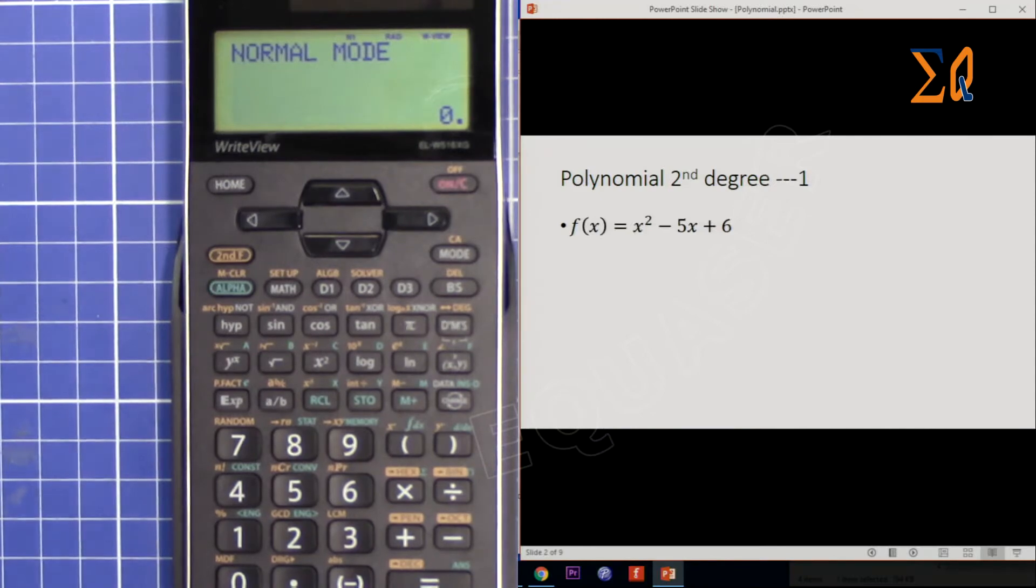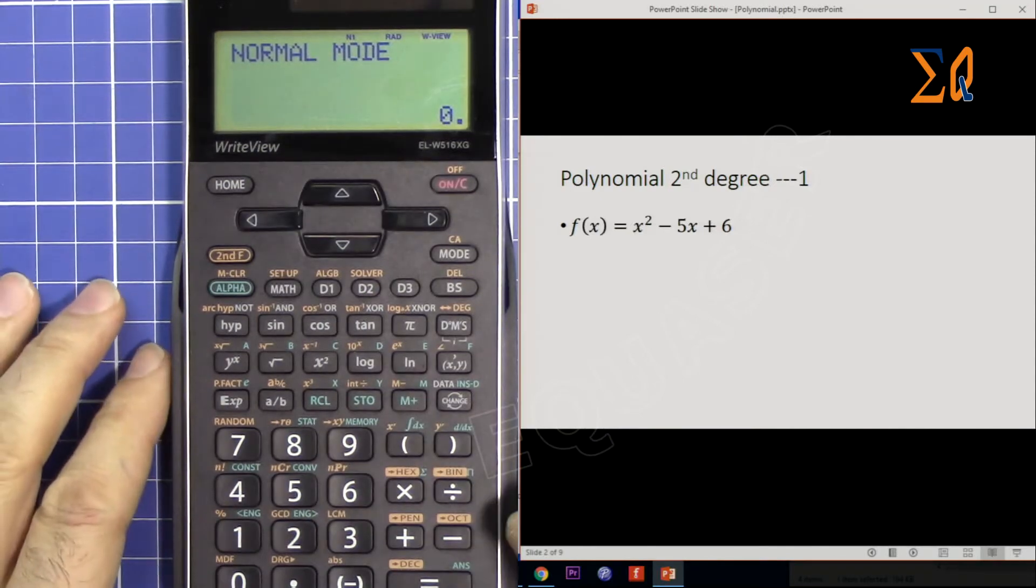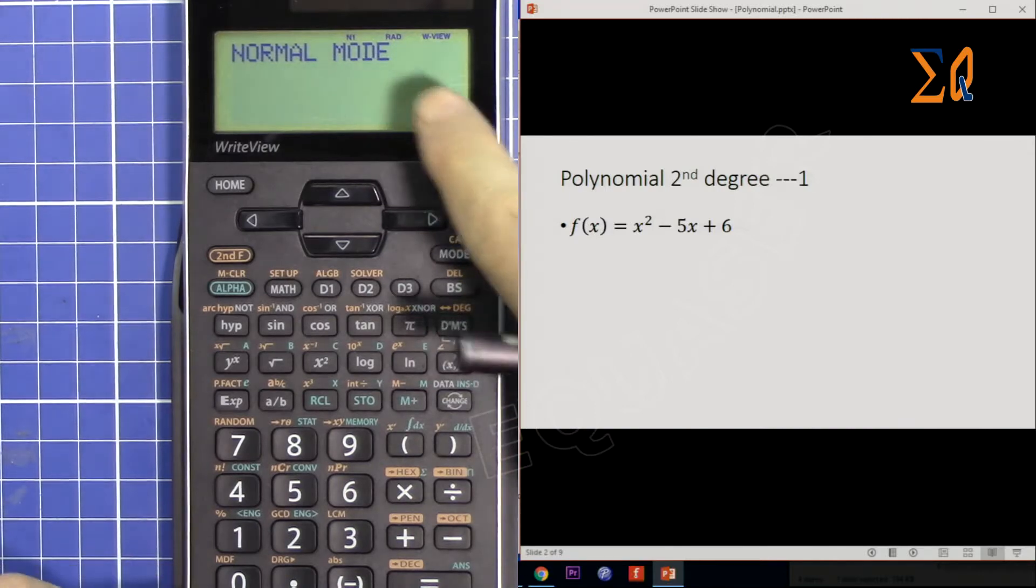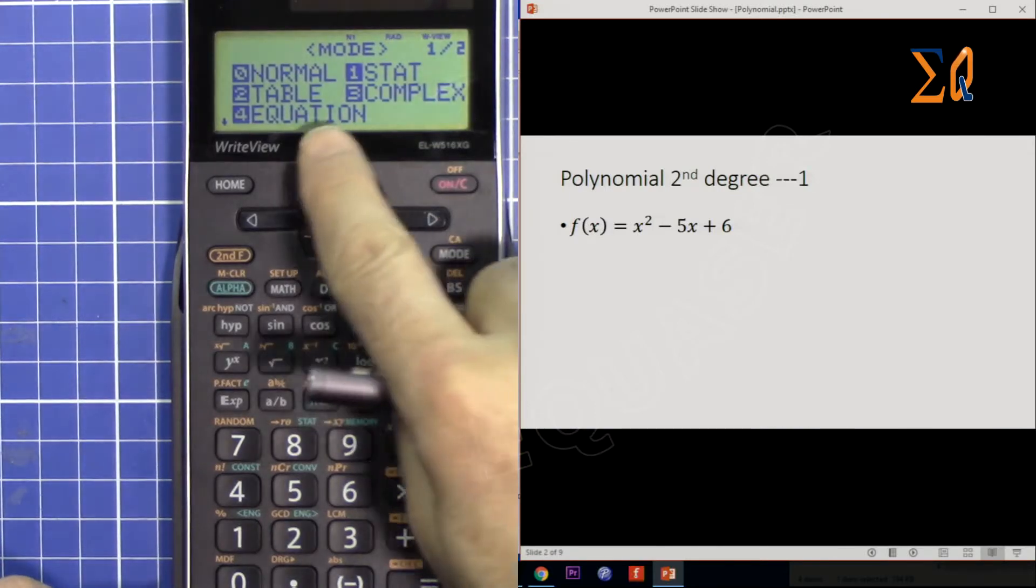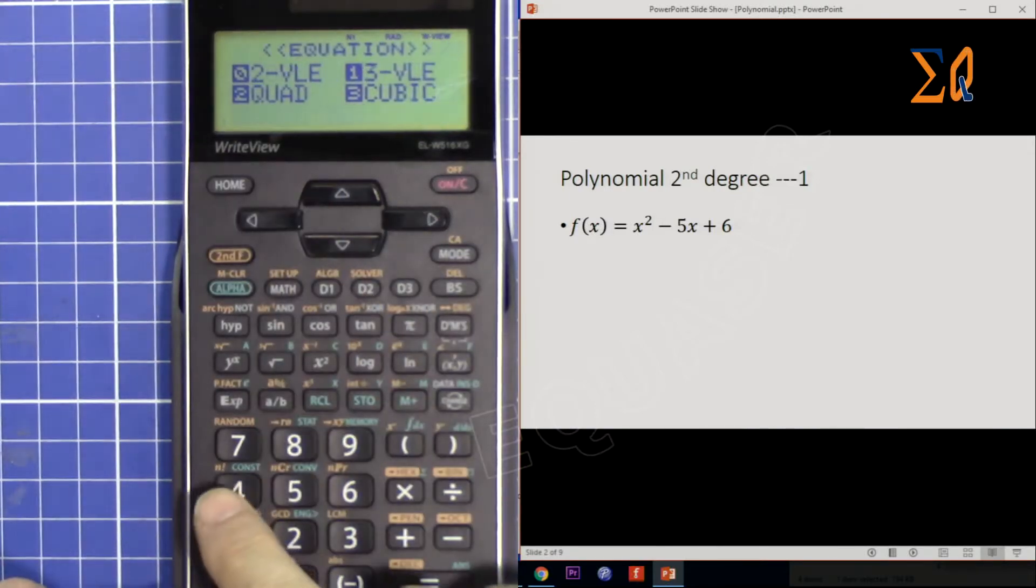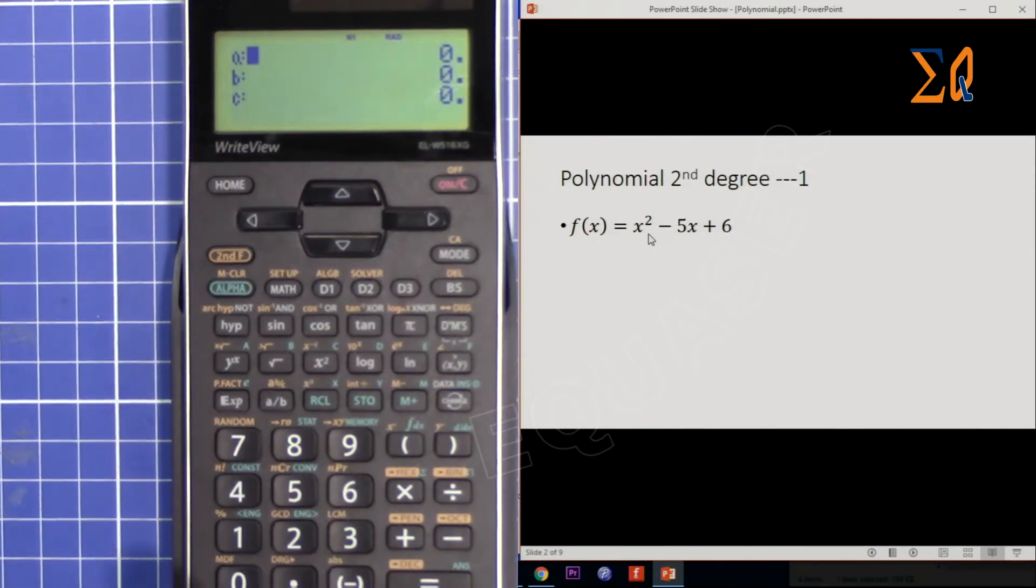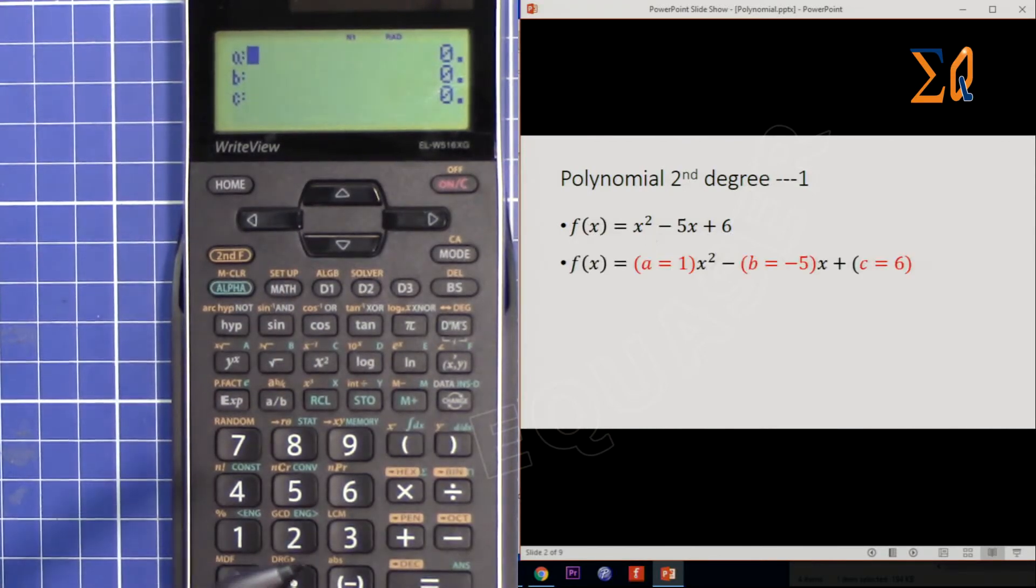Let's say I have a second degree equation: x² - 5x + 6. To do an equation, press MODE and go to number 4 Equation. Because my maximum polynomial degree is 2, I'm selecting quadratic, so press 2. Now all these coefficients of x are my a, b, and c. Here a is 1, b is -5, and c is 6.